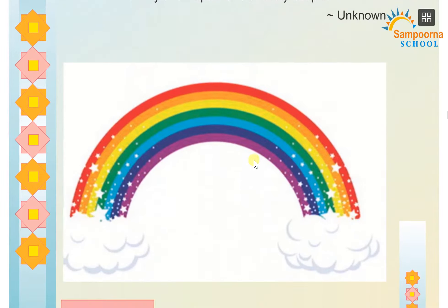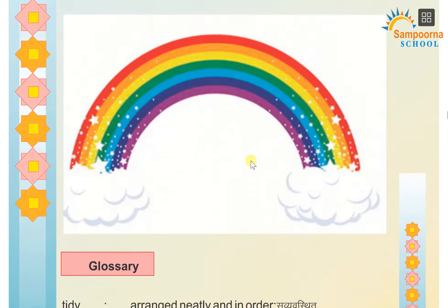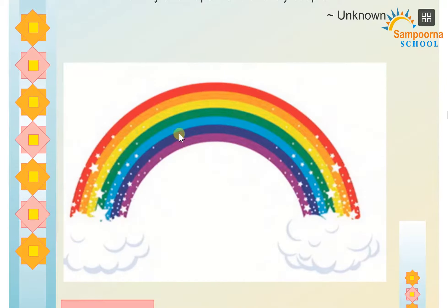Now here is the rainbow. Can you tell me the colors? It's called VIBGYOR — V-I-B-G-Y-O-R. That is violet, indigo, blue, green, yellow, orange, and red. You have to write all the VIBGYOR rainbow colors in your copy.